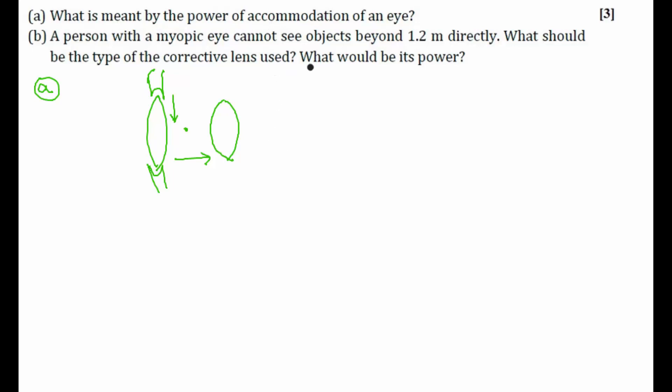So this ability of the eye is nothing but power of accommodation of an eye. Now let's try to answer part (b). A person with a myopic eye cannot see objects beyond 1.2 meters directly. So here is his eye and he is unable to see objects beyond 1.2 meters.